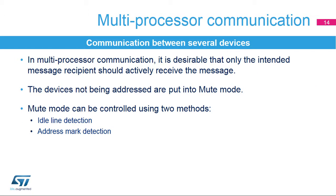To simplify communication between multiple processors, the USART supports a multi-processor mode. In multi-processor communication, it is desirable that only the intended message recipient should actively receive the message. The devices not being addressed are put into mute mode. The USART can enter or exit from mute mode using one of two methods: idle line detection and address mark detection.